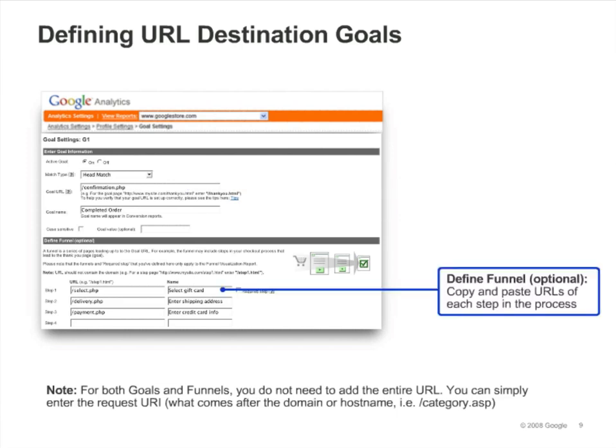Defining a funnel is optional. To define your funnel steps, you add the URLs of the pages leading up to the goal URL. Just as with goals, you don't have to enter the entire URL of a funnel step — just the request URI is fine. Provide a name for each step in the funnel; here we've entered 'select gift card' for step one. The names you enter will appear in your reports.